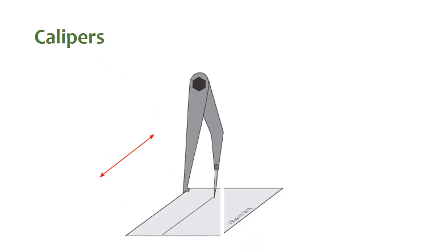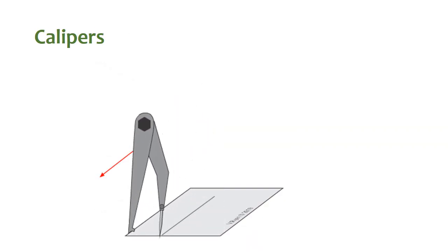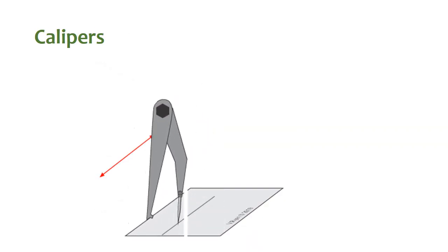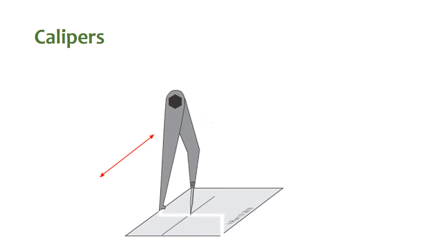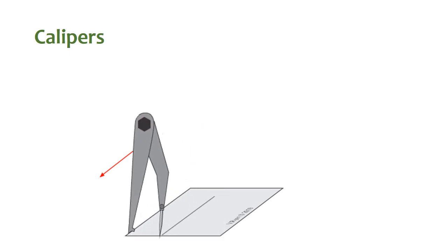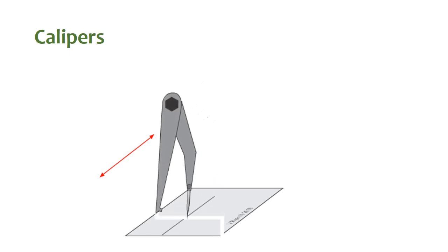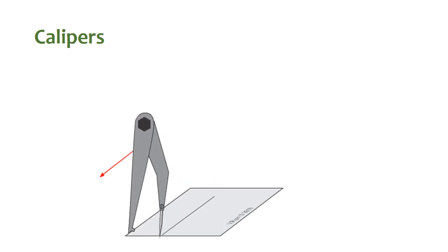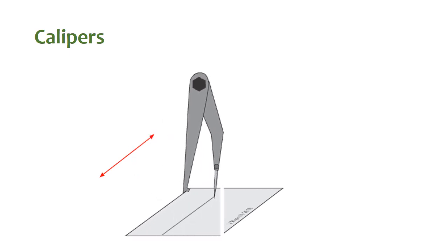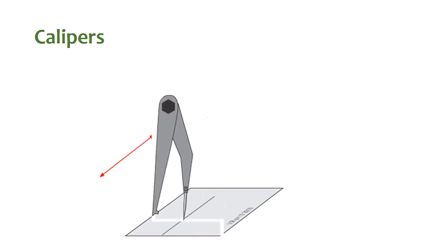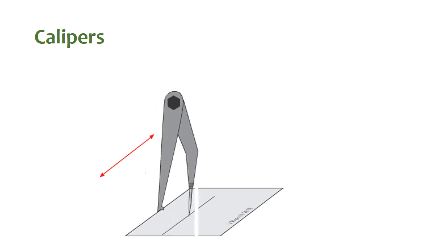Calipers. Calipers is another length measuring instrument. It usually measures length in centimeters, and its least count is 0.1 cm.